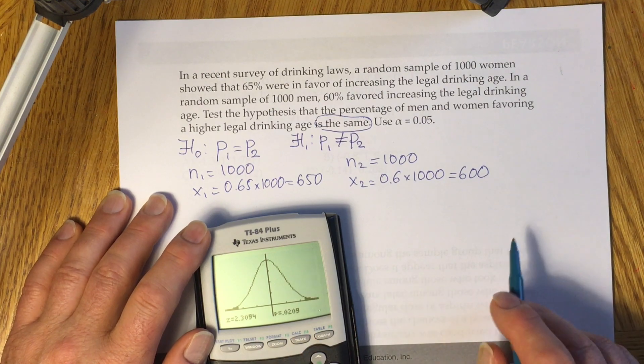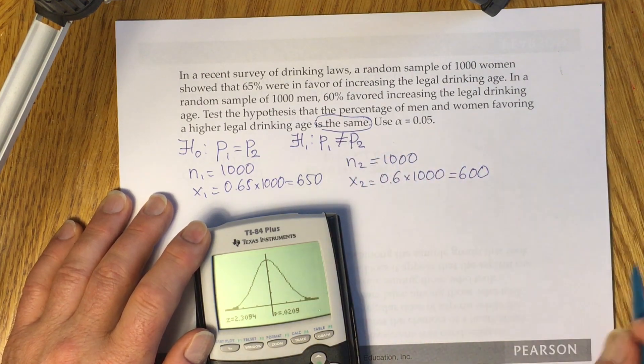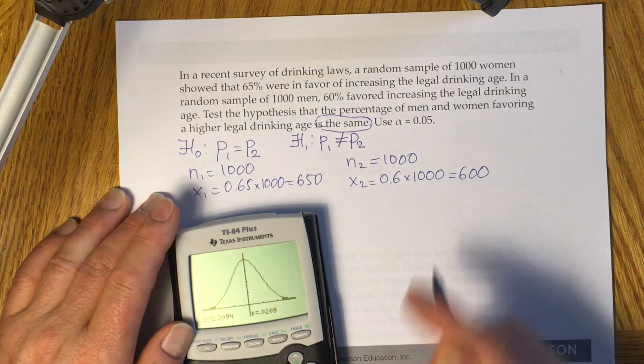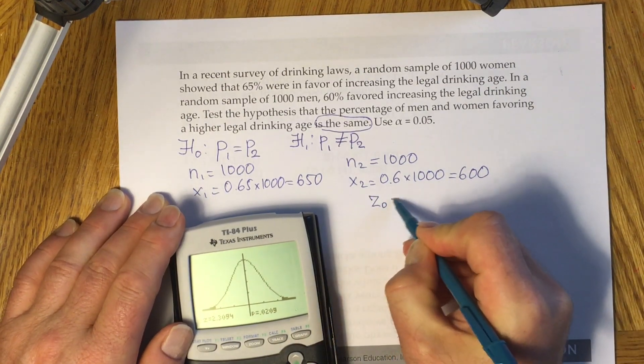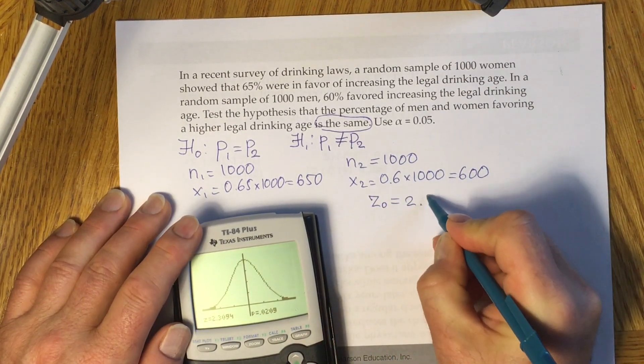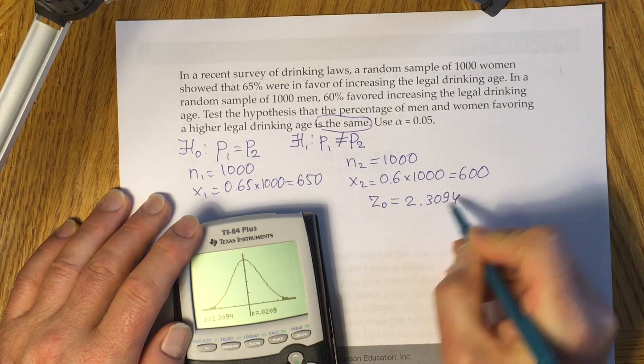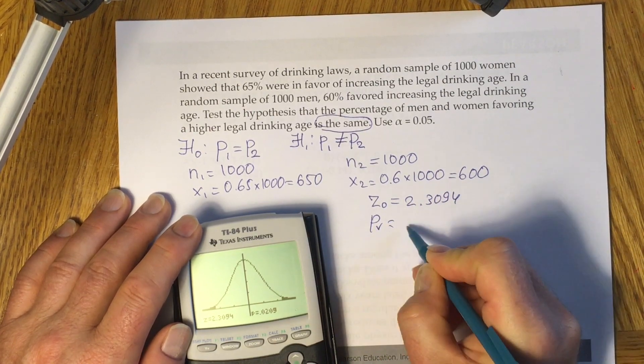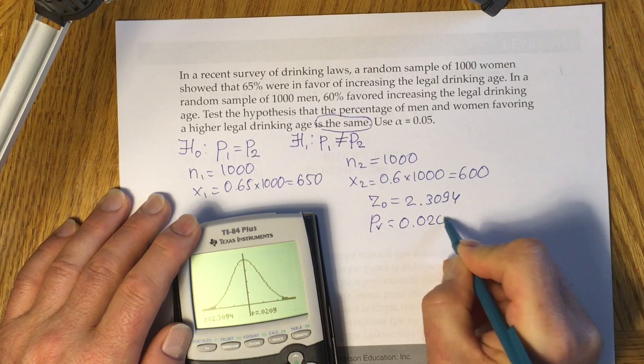You see two tails on the picture which corresponds to the inequality sign in alternative hypothesis. You have from the left test statistic 2.3094, and from the right you have p-value 0.0209.